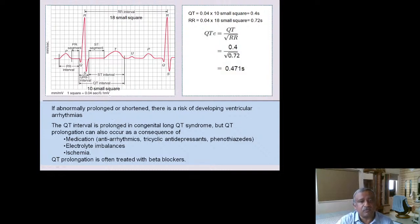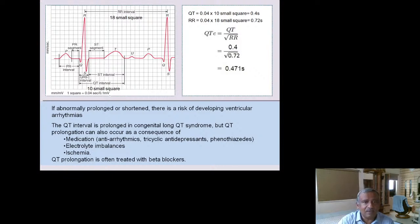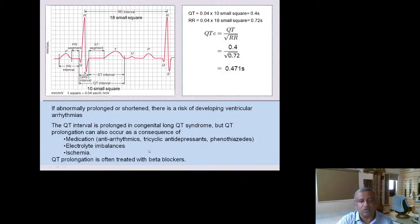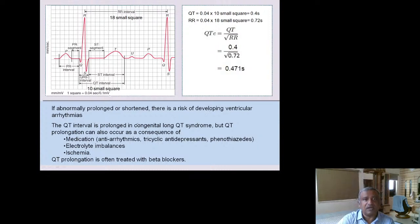Causes of prolonged QT interval include congenital long QT syndrome, anti-arrhythmic drugs, tricyclic antidepressants, phenothiazines, electrolyte imbalances, and ischemia. Hypocalcemia prolongs QT; hypercalcemia shortens QT — an inverse relationship. QT prolongation is treated with beta blockers. During the COVID era, hydroxychloroquine and azithromycin — both used as treatments — can prolong the QT interval and cause arrhythmias when combined. Congenital long QT syndromes include Jervell and Lange-Nielsen syndrome and Romano-Ward syndrome.